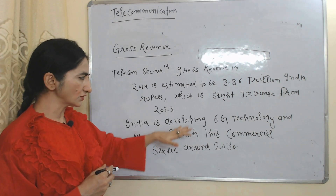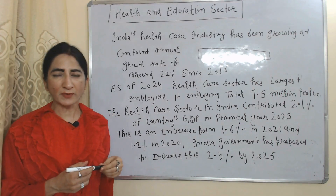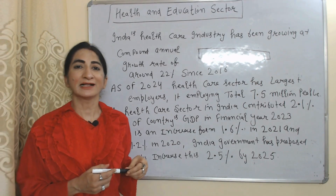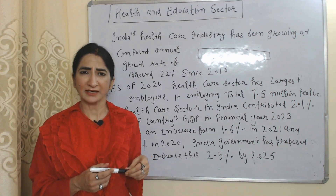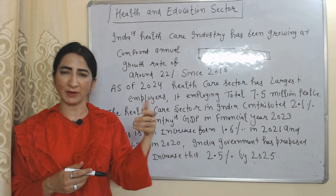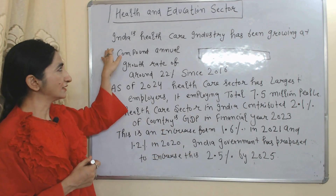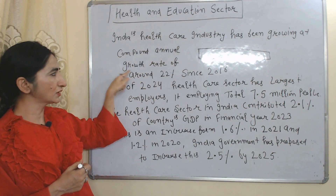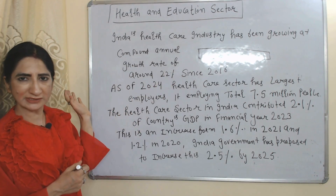India plans to launch 6G commercial services around 2030. Now we will see the health and education sector. Health and education are very important and very challenging service sectors. These services are provided by both public and private sectors. India's healthcare industry has been growing at a compound annual growth rate of around 22% since 2016.